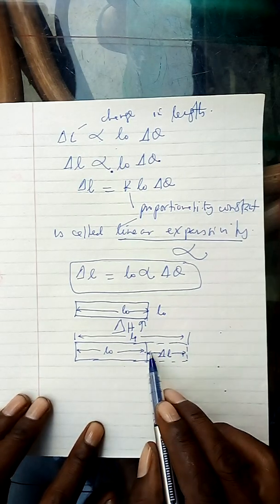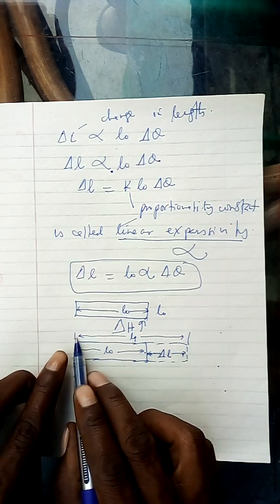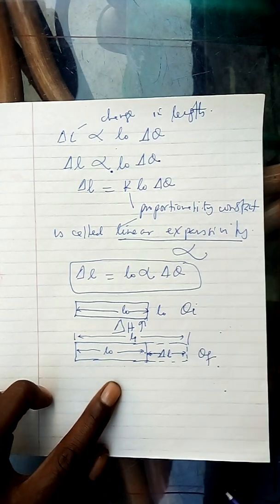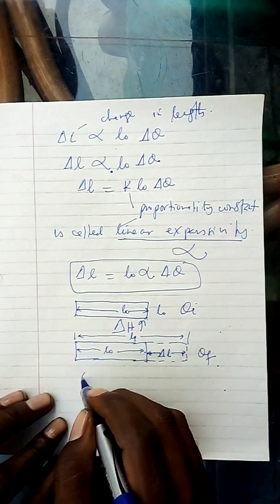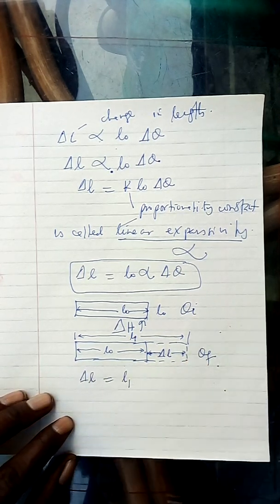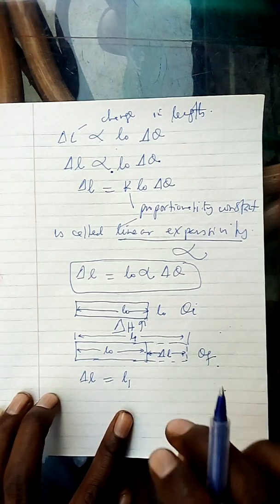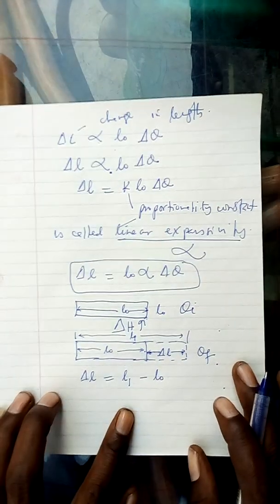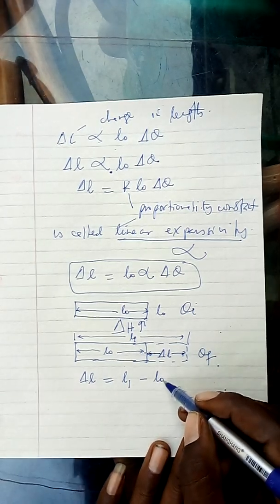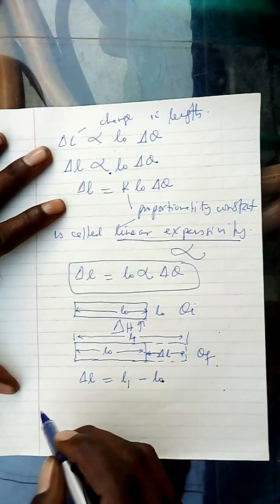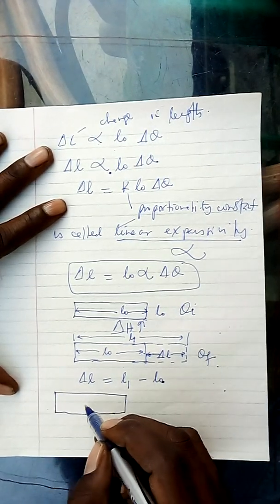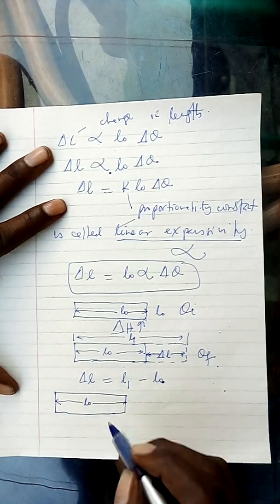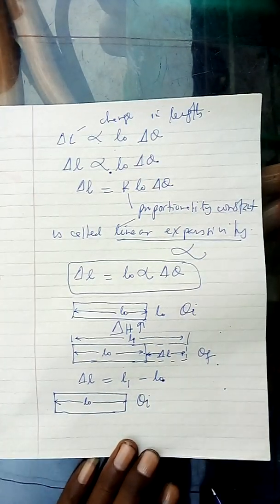Once you want to get this change in length, you have to take the new length that you have obtained. Before the initial temperature it was there, then you increased the temperature, and there is also an increasing length. So change in length is equal to the new length formed after you increased the temperature, minus the length that was before. This was the object before — it was L0, the original length at initial temperature.